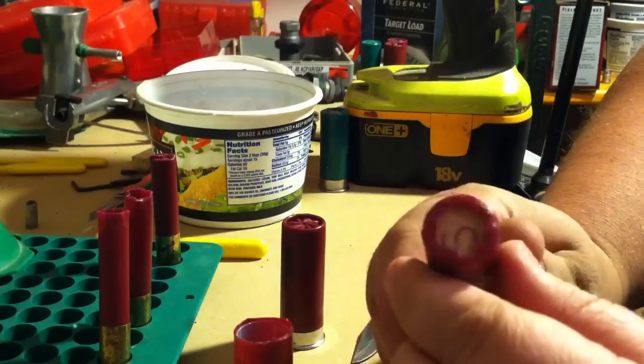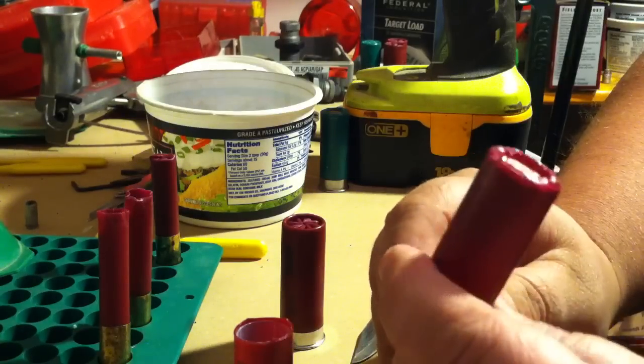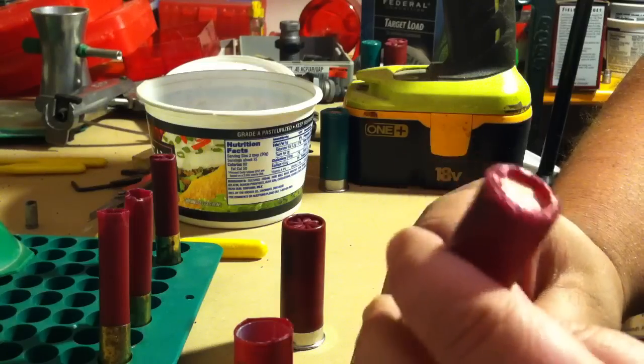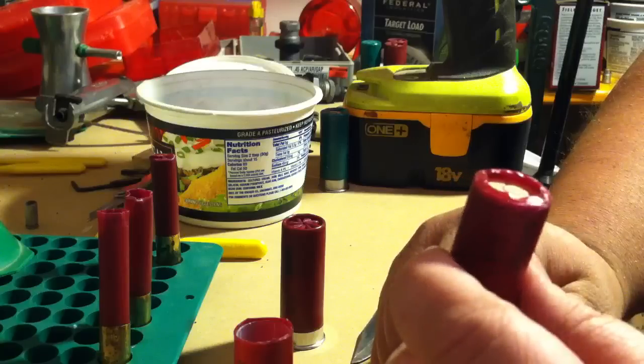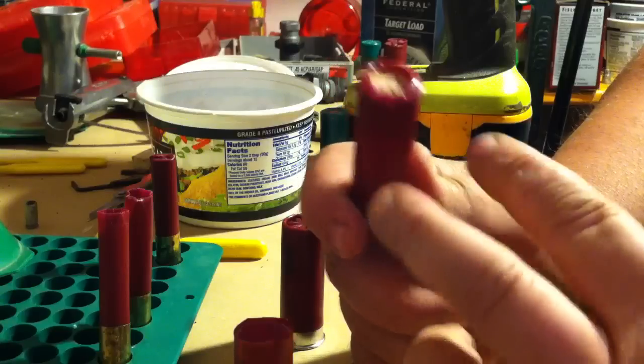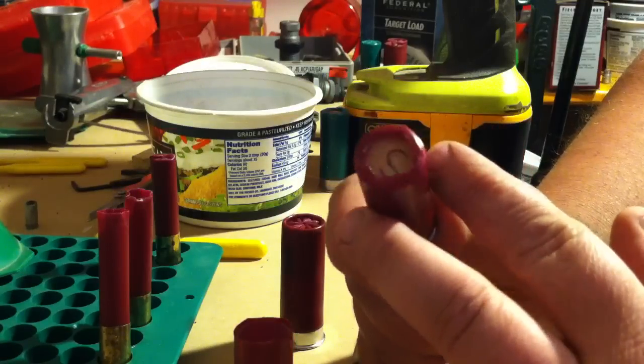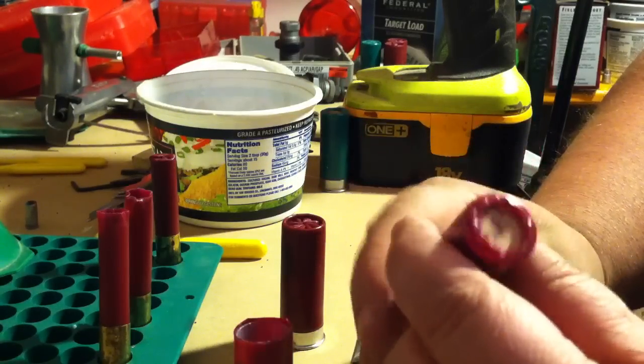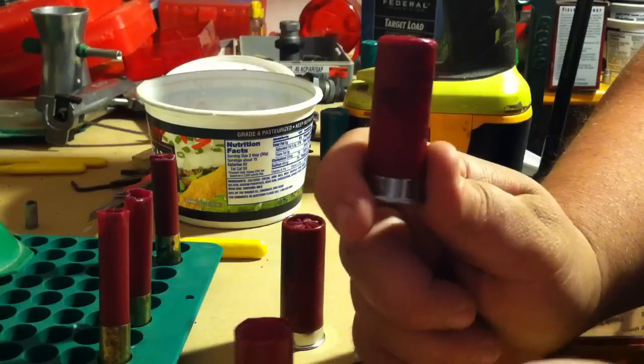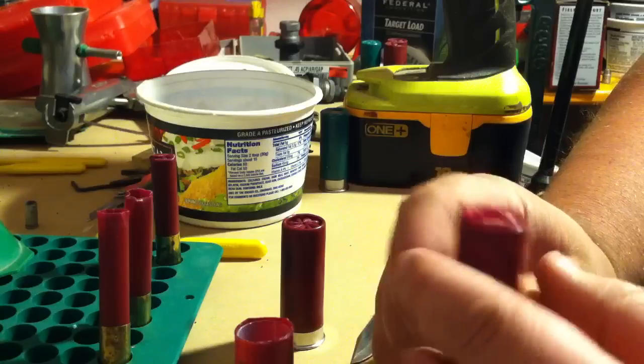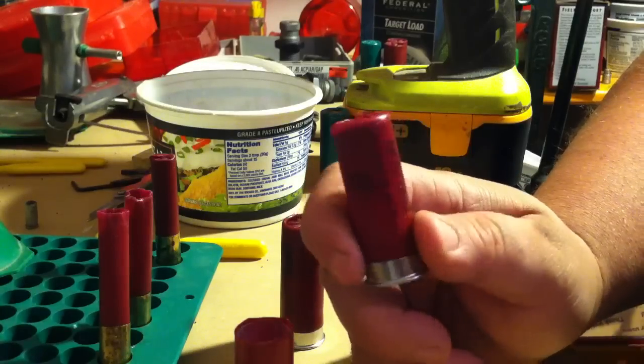I do the same thing with buckshot. I got some triple-ought buck that I throw in these. I'll throw six - it only fits six with an overshot card on there. These are great target slugs and it's plenty of power to shoot a deer with at close range. It really makes for an affordable slug and other improvised shotgun shells. Thanks for watching guys.